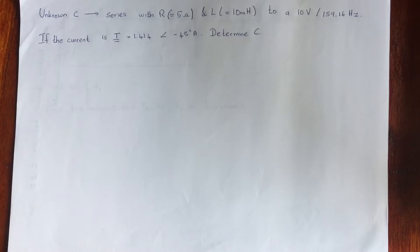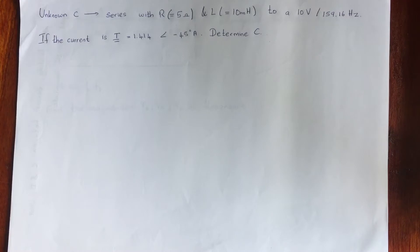If the current is 1.414 at an angle of minus 45 degrees ampere, determine the value of the capacitor. Please stop the video and try to do this question on your own, and after that watch the rest of the video so you can understand it more clearly.